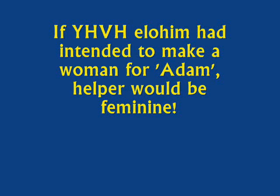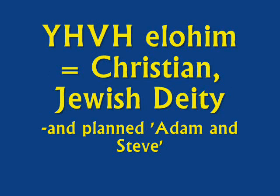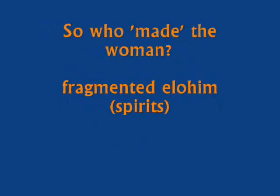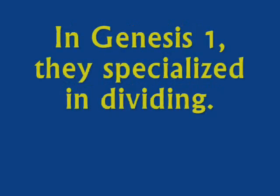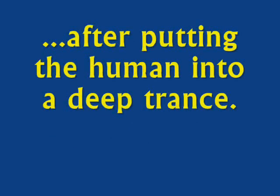You have a problem with the next verse too. If God is deciding that it's not good for the human to be alone, why is the solution to make all kinds of animals? From a heterosexist point of view, this is almost laughable — oh, there's a lonely guy, let's get him a bunch of pets. According to the oral tradition, the companionship provided by the animals as a cure for loneliness worked, at least for 100 years. The human got along very well with the animals; they all lived in harmony. So none of the animals constituted a helper opposing the human.